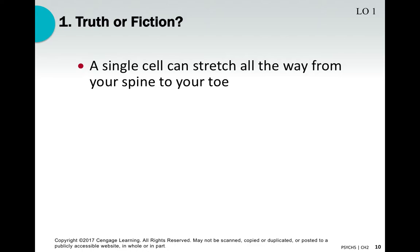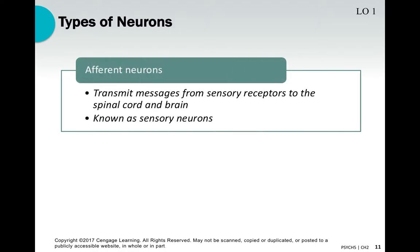Truth or fiction: a single cell can stretch all the way from your spine to your toe. That is true — certain nerve cells in our bodies are very, very long. There are some that extend several feet or potentially even longer.